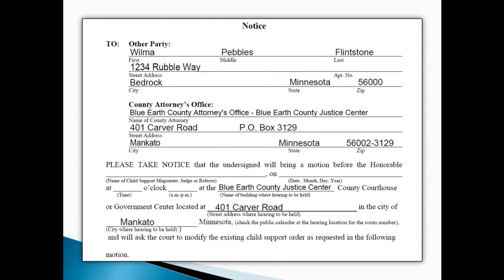The second space is for the county attorney's address. You do not need to write the actual name of the county attorney. In our example, the Blue Earth County Attorney's Office will be served and their office is located in the Blue Earth County Justice Center. This contact information is generally found in your court order. If not, you can contact your Child Support Office for the county attorney's information, or the county attorney's office directly.